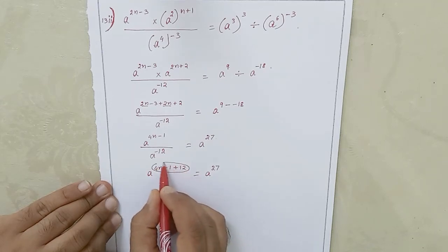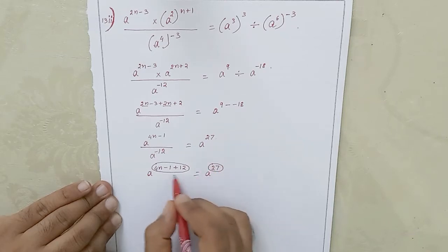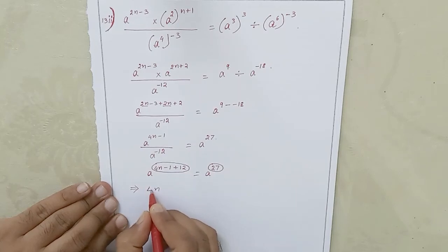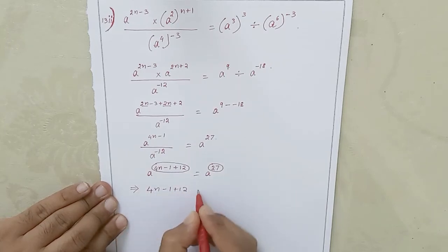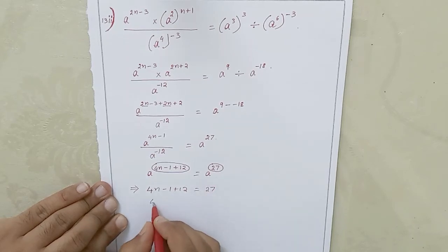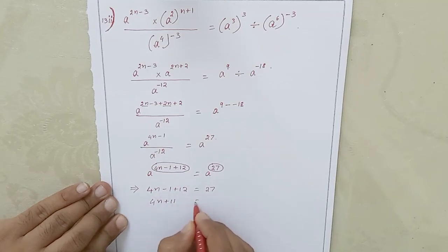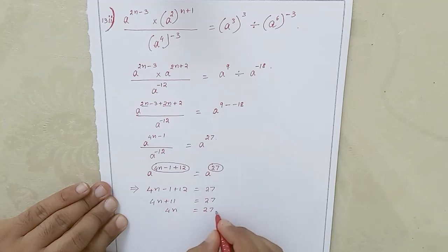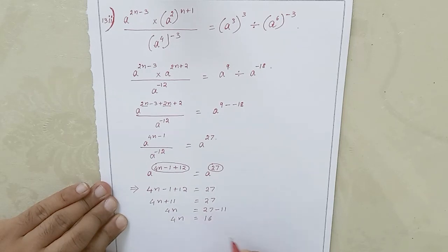Now I can equate these two powers. This implies 4n minus 1 plus 12 equals 27. So 4n plus 11 equals 27, which gives 4n equals 27 minus 11, so 4n equals 16. Therefore n equals 4. This is the solution.